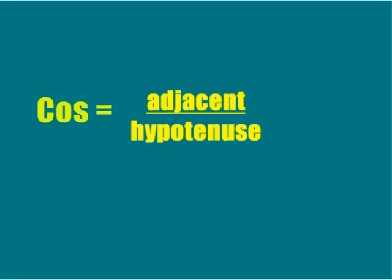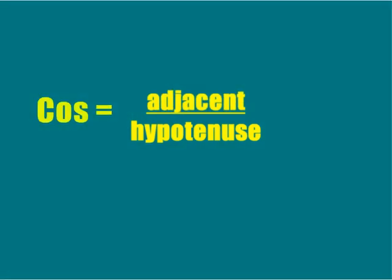The cosine of an angle is determined by dividing the side adjacent to that angle by the hypotenuse of the triangle, thus giving you CAH.